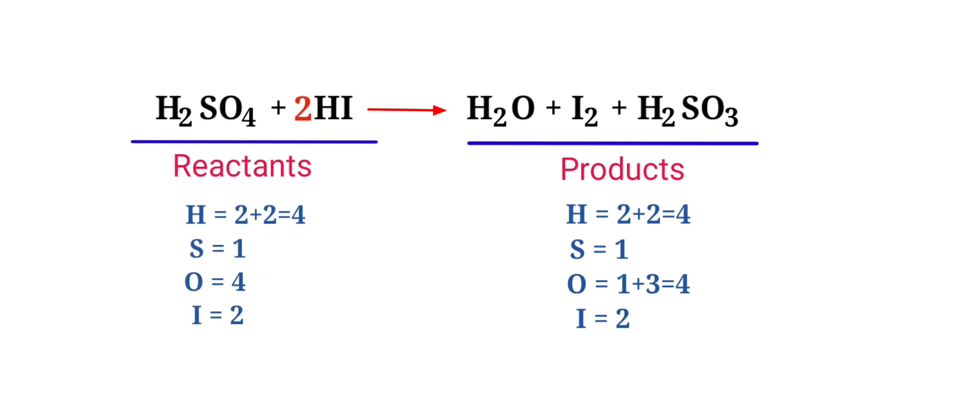The equation is now balanced. There are 4 hydrogen atoms, 1 sulfur atom, 4 oxygen atoms, and 2 iodine atoms on both sides.